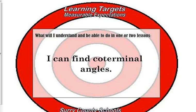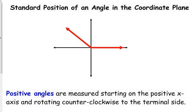Co-terminal angles — the name describes itself. When we're talking about angles in the coordinate plane, we need to talk about standard position. Angles always start on the positive x-axis. The positive x-axis is always your initial side — that is always the initial side.